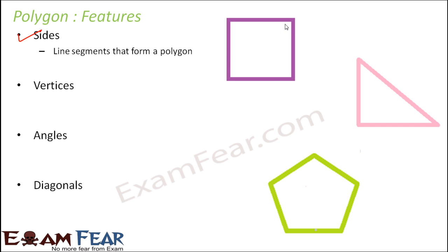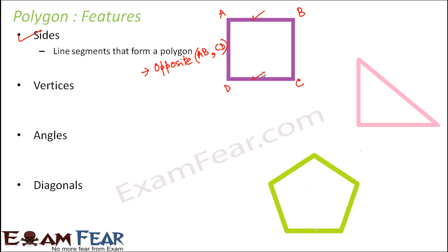Consider this polygon, which is made up of four sides. Two sides located opposite to each other are called opposite sides. If we name the polygon as ABCD, then AB and CD are opposite sides because they are located opposite to each other. When you look at AB and BC, they are located one after another.